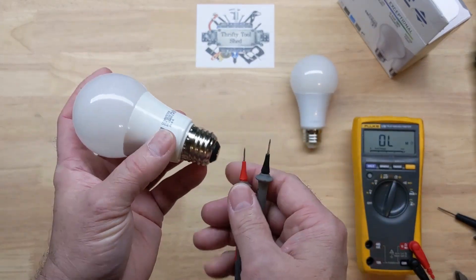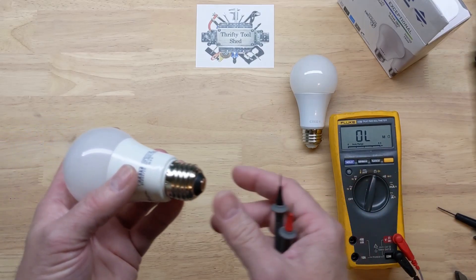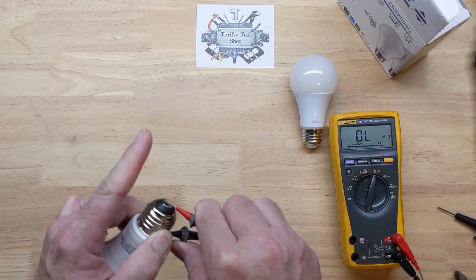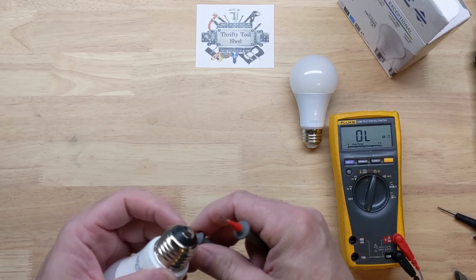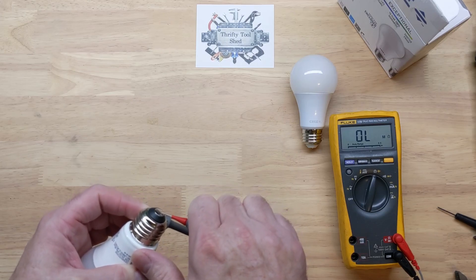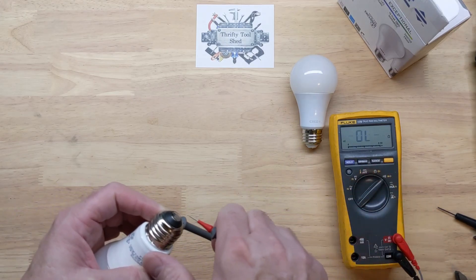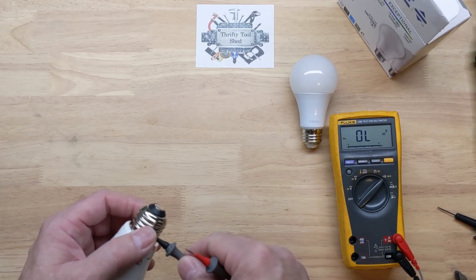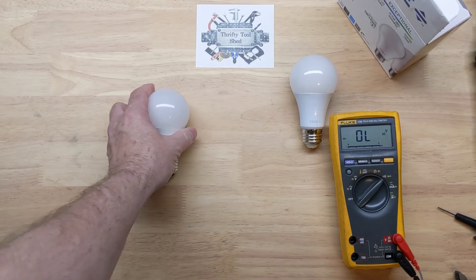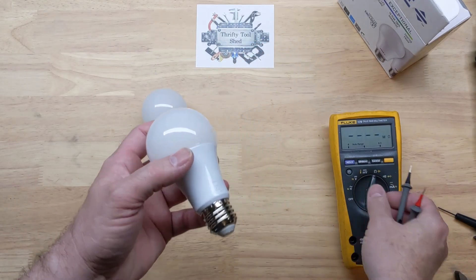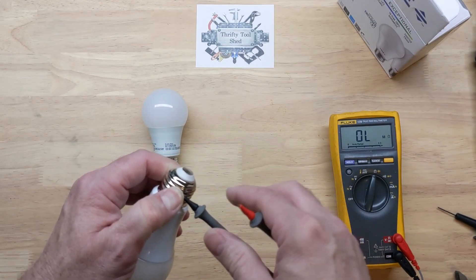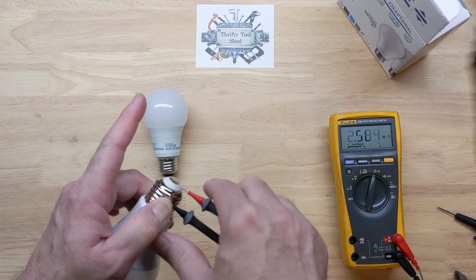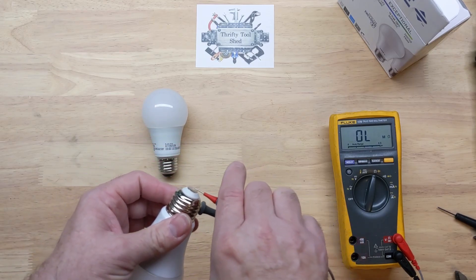Before we even tear into it and look inside, I just thought we'd see if we have any impedance at all. We show open, completely open. We'll switch it around in case it's a diode or anything. We have absolutely no load. Just to compare with a new Cree, I would expect at least getting into the megaohms or so. Yeah, two megs - we got a capacitor there, two megs and rising.